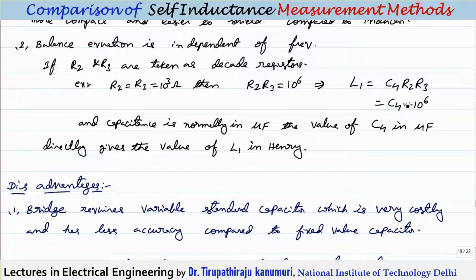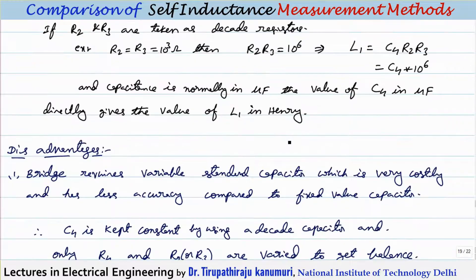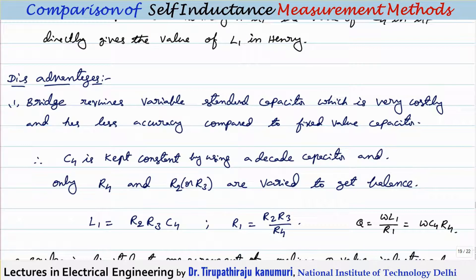Then L1 = C4 × 10⁶. Since practically the capacitor is measured in microfarads, micro multiplied by mega cancels out. So after adjustment, whatever value the capacitor shows directly indicates the unknown inductance in Henrys — making the scale very easy to read.